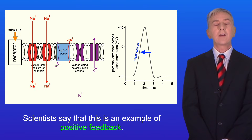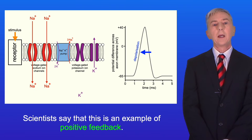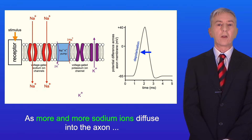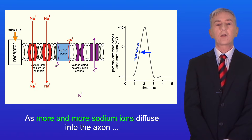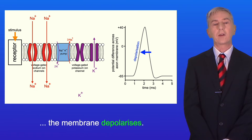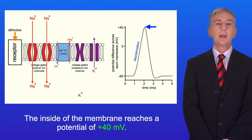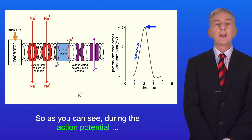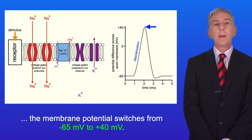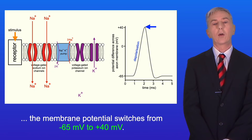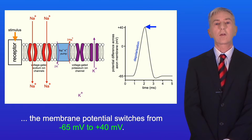Scientists say this is an example of positive feedback. As more and more sodium ions diffuse into the axon, the membrane depolarizes. The inside of the membrane reaches a potential of plus 40 millivolts. So during the action potential, the membrane potential switches from minus 65 millivolts to plus 40 millivolts.